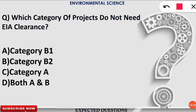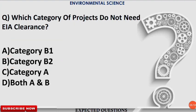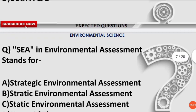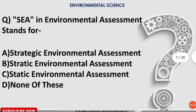The next question is very frequently asked: which category of projects does not need EIA clearance? The correct option is B — Category B2 projects do not require any Environmental Impact Assessment clearance.